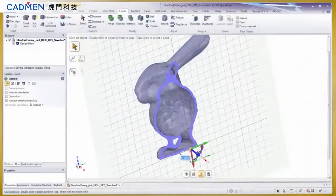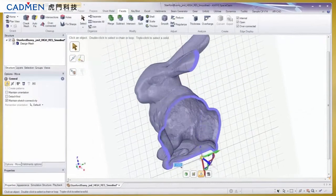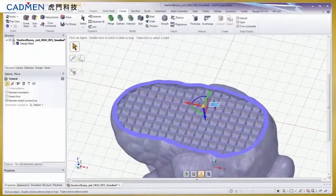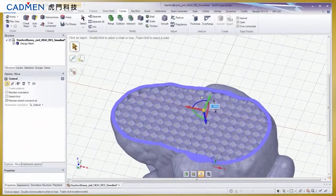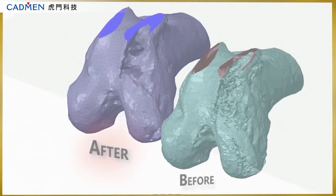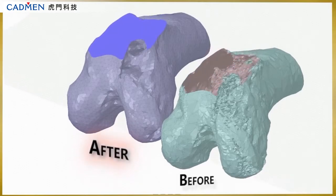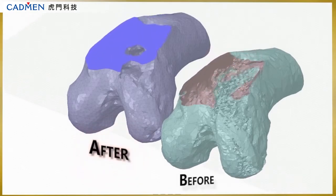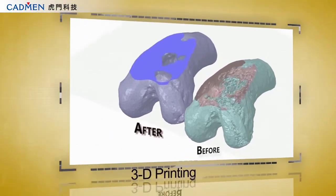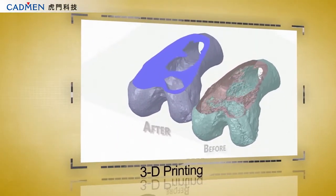Smooth facets, create a basic or custom infill for the ideal strength to weight ratio, and even perform a complex shrink wrap to drastically smooth dirty scans.